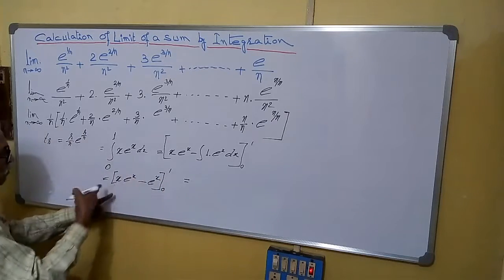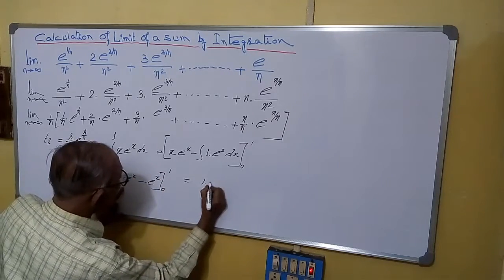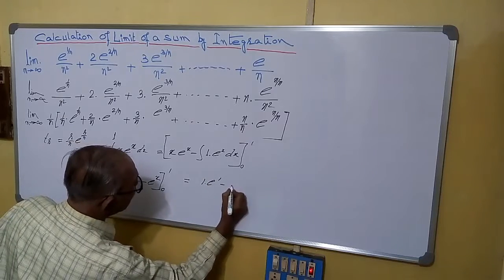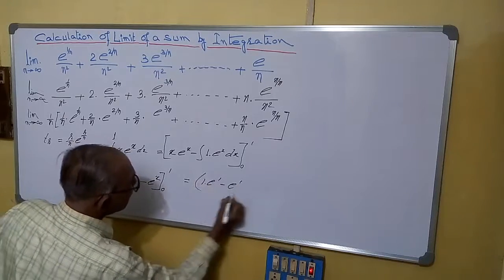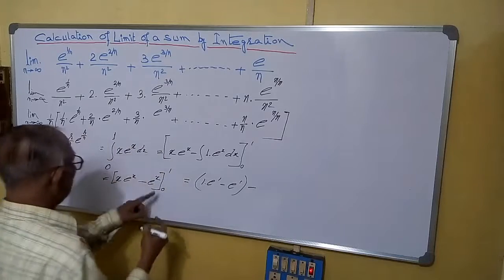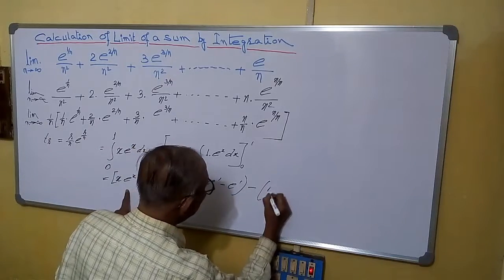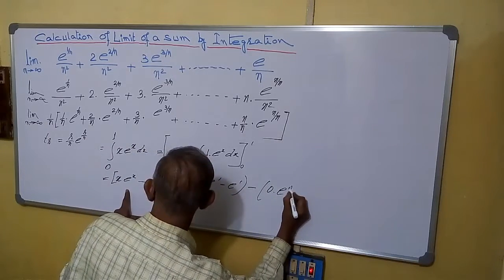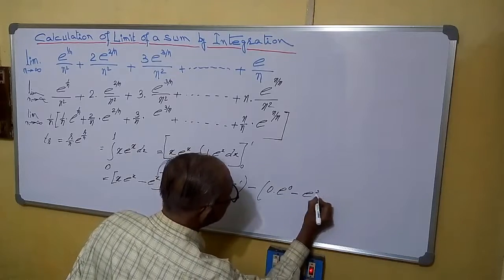This is: first putting 1, 1·e^1 minus e^1, minus, put 0, 0·e^0 minus e^0.